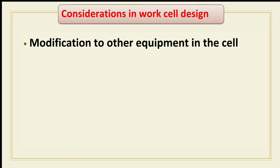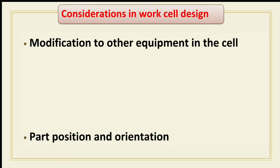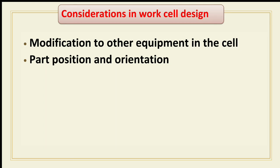The second consideration is part position and orientation. For raw workpieces being delivered into the cell, it is important that the robot have a precise pickup location to get the parts from the conveyor or other work-handling system. At this pickup point, the parts must be in a known orientation so that the robot can grasp and hold them consistently and accurately.